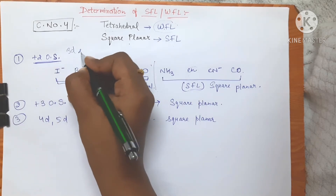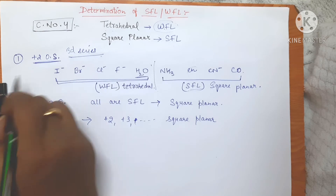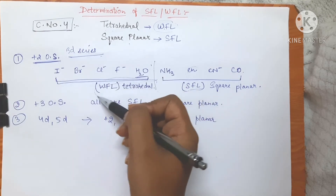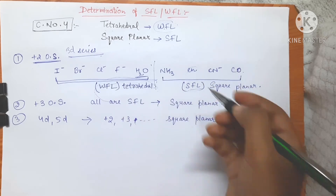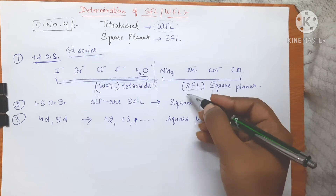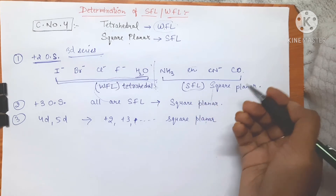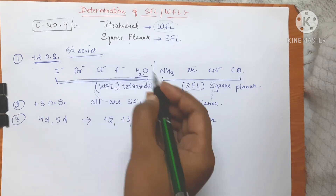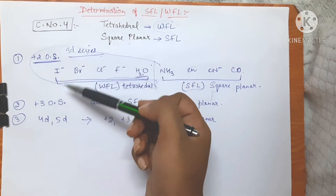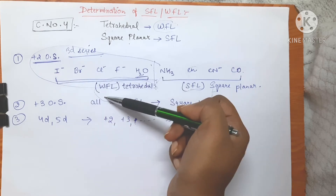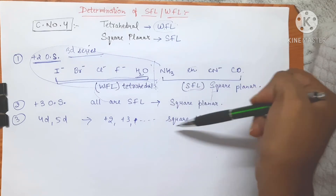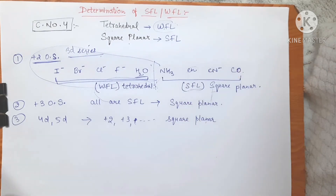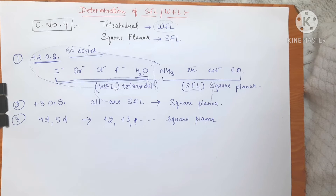The main crux to remember is: in the 3d series with plus two oxidation state, from halides up to oxygen donors all ligands behave as weak field ligands. In all other possible cases — plus three oxidation state, 4d and 5d series — the ligands behave as strong field ligands and the complexes have square planar geometry. This is the summary for coordination number four complexes.